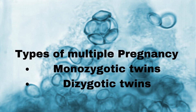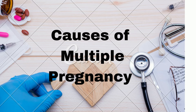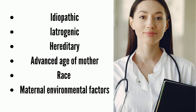Types of Multiple Pregnancy: Monozygotic Twins and Dizygotic Twins. Causes of Multiple Pregnancy include: Idiopathic, Iatrogenic, Hereditary, Advanced Age of Mother, and Race.